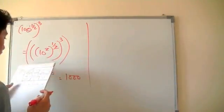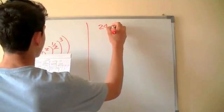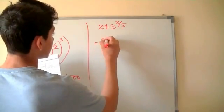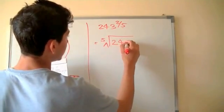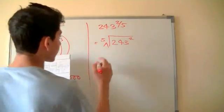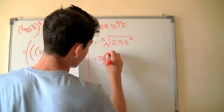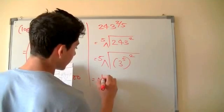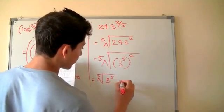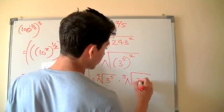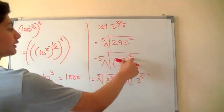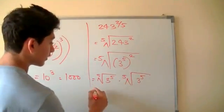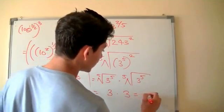The final example is 243 raised to 2 over 5. The denominator 5 is the index, so it's the 5th root of 243 squared. Since 243 is 3 to the 5th power, the 5th root and the exponent cancel, leaving 3 squared. Because it's raised to the 2nd power, you do this twice: 3 times 3, which gives you 9.